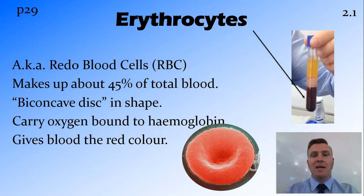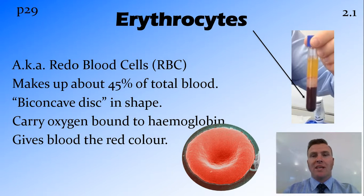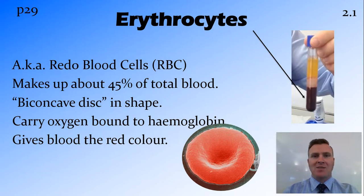The red blood cells, or erythrocytes, contain hemoglobin — we'll look at hemoglobin in another video. And the erythrocytes are what gives blood its red colour, remembering that all blood is red.